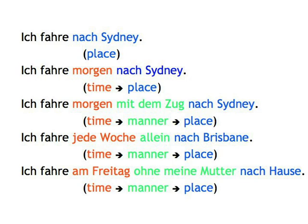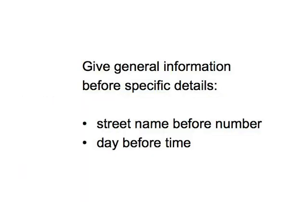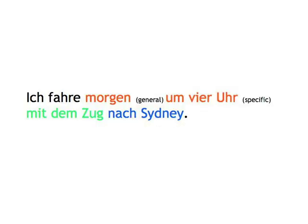Ich fahre jede Woche allein nach Brisbane. Ich fahre am Freitag ohne meine Mutter nach Hause. If you have more than one time expression, the rule is general to specific. For example, when giving addresses in German, you give your town before the street address. Look at this sentence: Ich fahre morgen um vier Uhr mit dem Zug nach Sydney. Morgen — general. Um vier Uhr — specific. Have a look at the transcript of our video scene. You'll find a lot of further examples of the TMP rule.